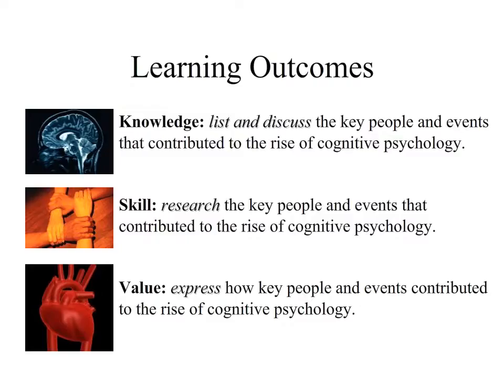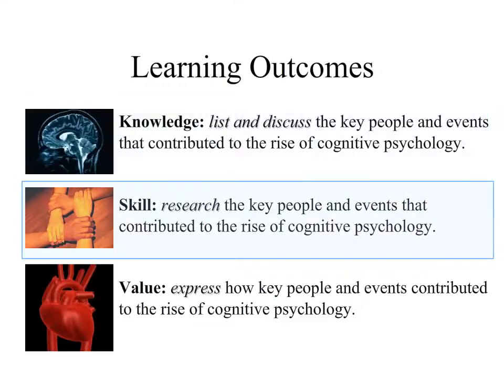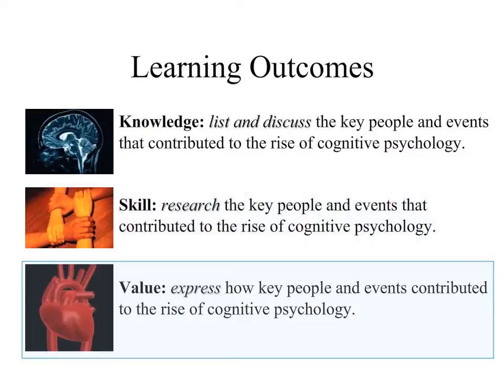Before we begin, let's outline the three learning outcomes for this module. In terms of knowledge, we want you to be able to list and discuss the key people and events that contributed to the rise of cognitive psychology. You're going to use your research skills to figure out who those people and events were and why they were significant. And the last part — the valuing part — we want you to express why these events were significant.